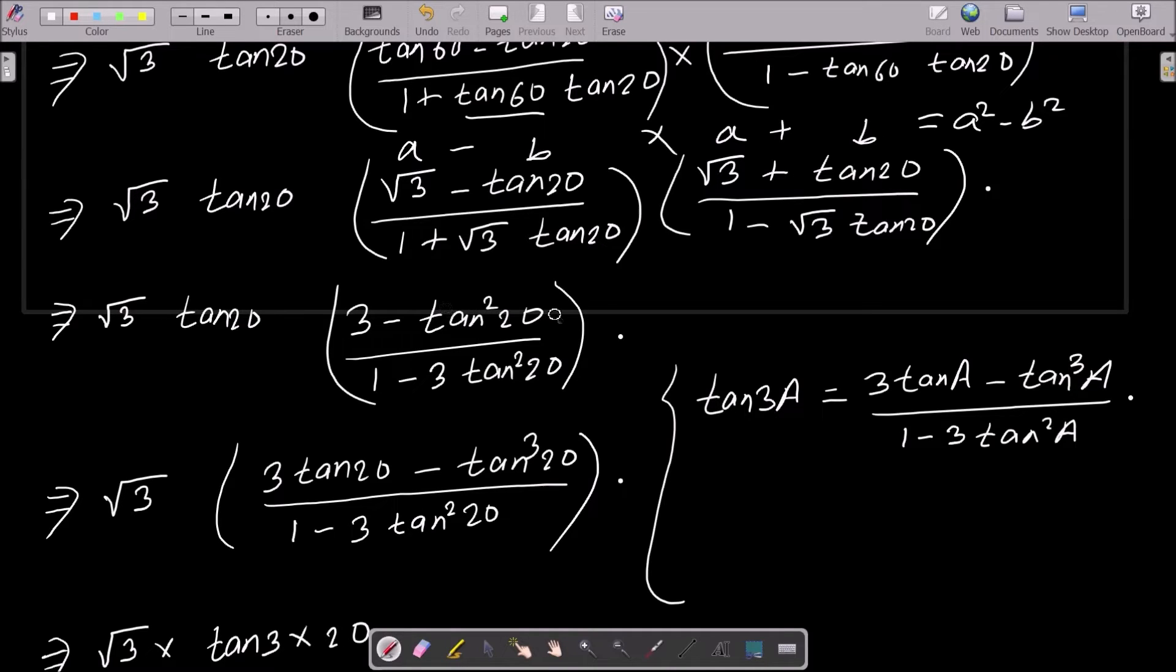Now assume this is a, this is a and this all is b, and here b. Here minus, here plus. So (a + b)(a - b), that is the formula a² - b². So that here 1² minus √3² tan²20°, that is 3tan²20°.